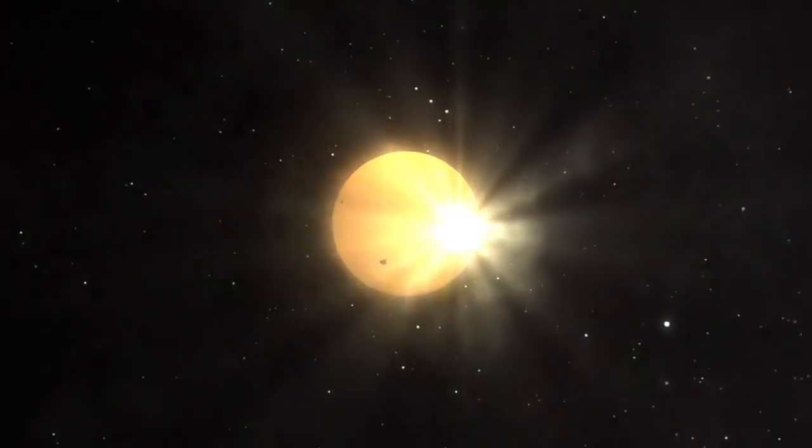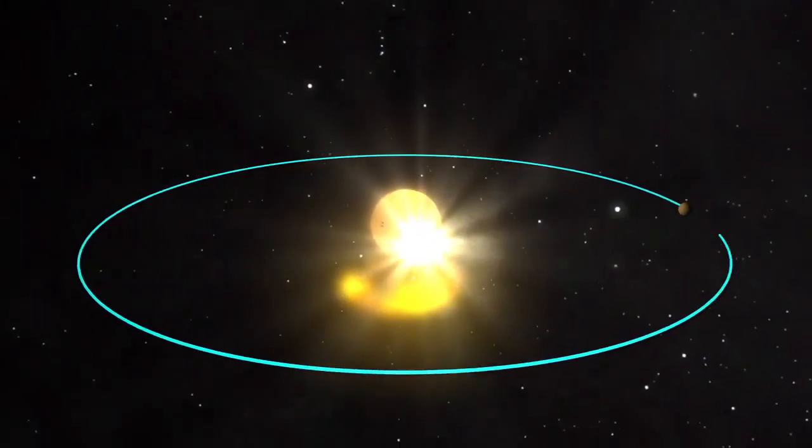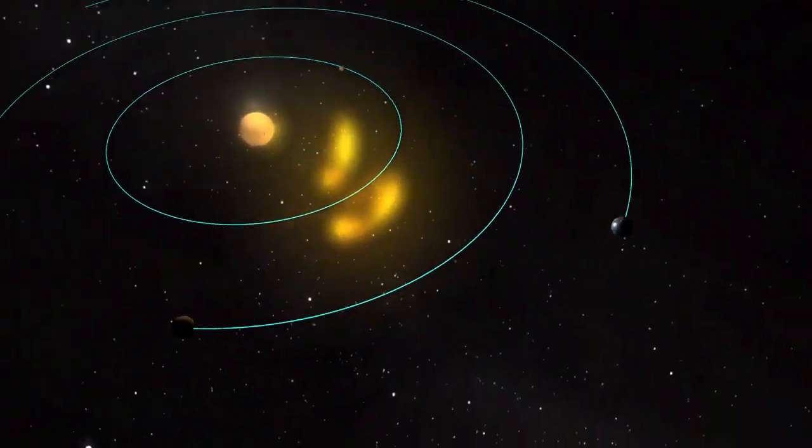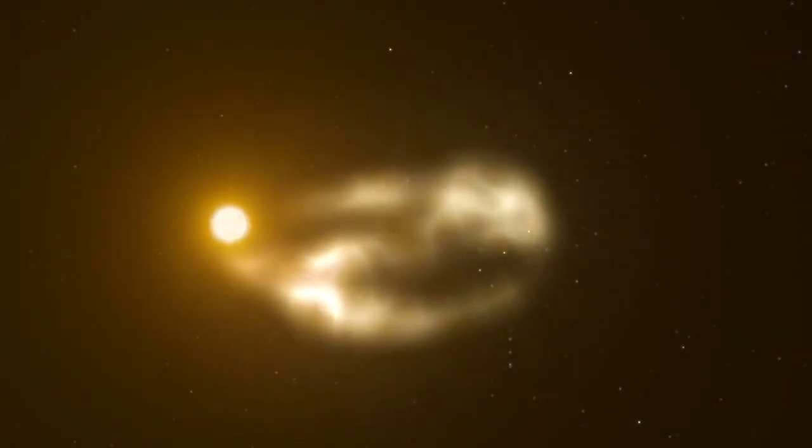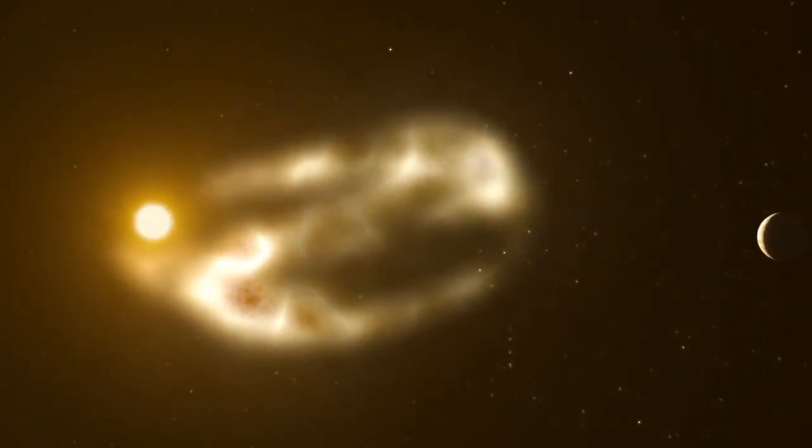A CME is a huge cloud of plasma that bursts out of the Sun's atmosphere and is held together with magnetic fields. An average CME travels at about 1 million miles per hour and weighs around 2 trillion tons.